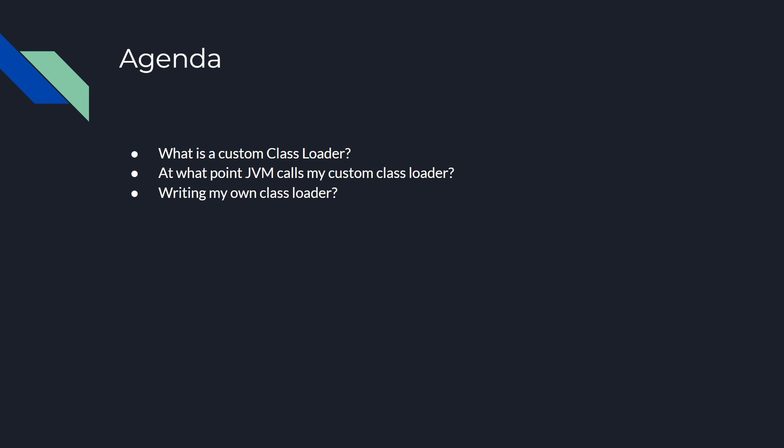First we need to understand what a custom class loader is. We know there are different types of class loaders in Java: bootstrap, extension, and application or system class loader. In Java we can create our own custom class loader by extending the ClassLoader class. ClassLoader itself is a class that represents a class loader, and we write the class loading logic in that custom class loader. It can be used to load classes from non-standard sources such as a database, network, file system, or any other custom source.